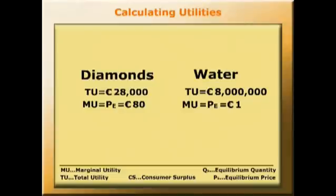So we have now shown that although diamond prices are high, and water price is very low, the total utility of water is much greater than the total utility of diamonds. Prices reflect marginal utility, not total utility.